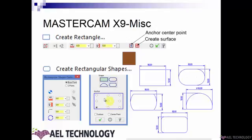You can define 9 anchor points. If you want an anchor point on the center, you select that radio button, define the coordinates of the center point, and the shape is created. If you want to create a surface along with the shape, you can check that option and click Apply.